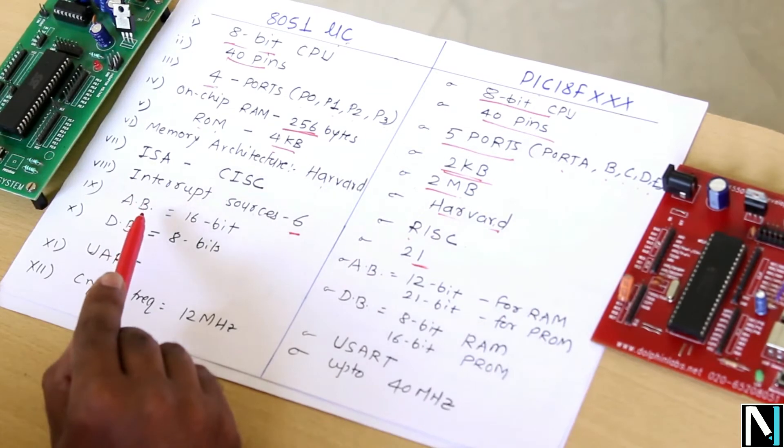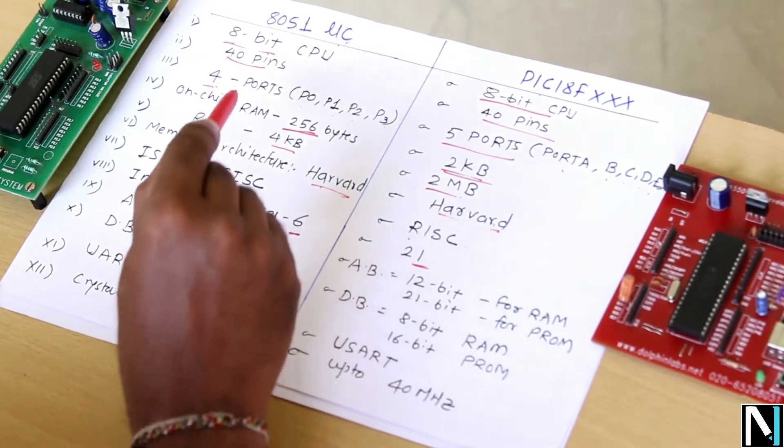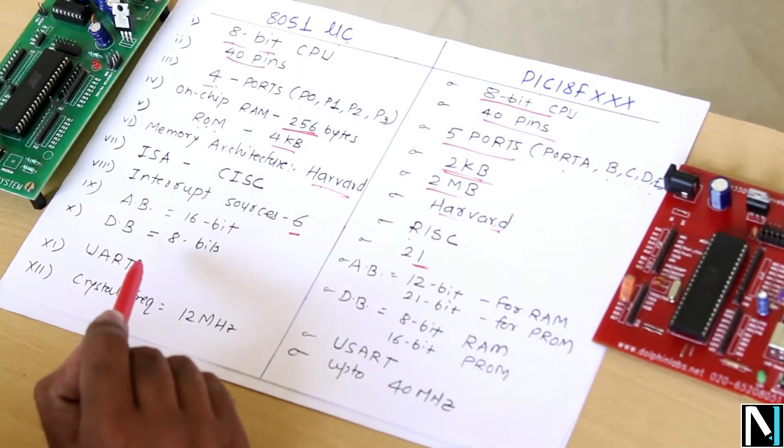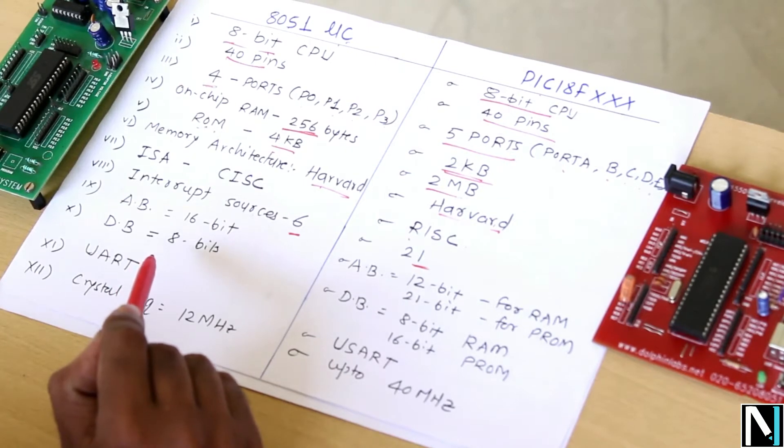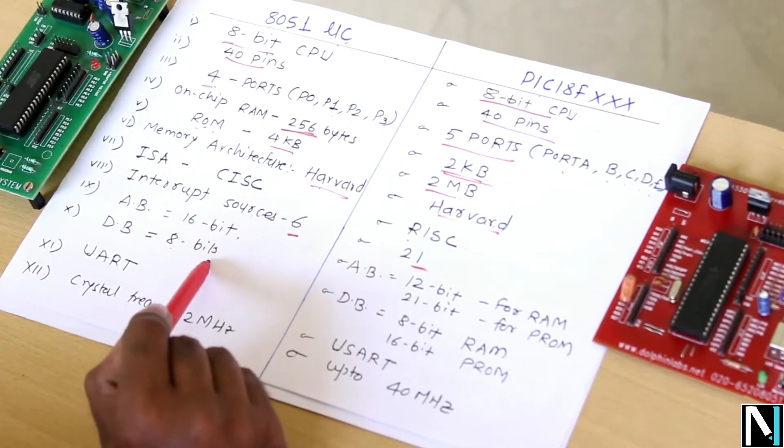In case of 8051 microcontroller, as it uses the Harvard memory architecture, that means program memory and the data memory are separate. And separate address bus and data bus are used. Address bus width is 16 bits. Here data bus width is 8 bits.